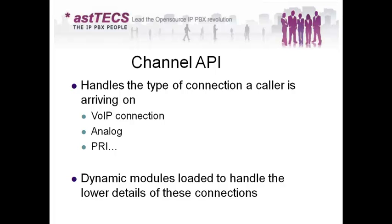Likewise, the Channel API handles which channel and how the caller comes in, and all those specs via dynamic module loading to handle the lower-level details of these connections. For each channel type you will have certain module files — for SIP it is chan_sip.so, for DAHDI it is chan_dahdi.so, and for GSM likewise. This is the finer detail of the channels and it is all handled by the dynamic module loader.